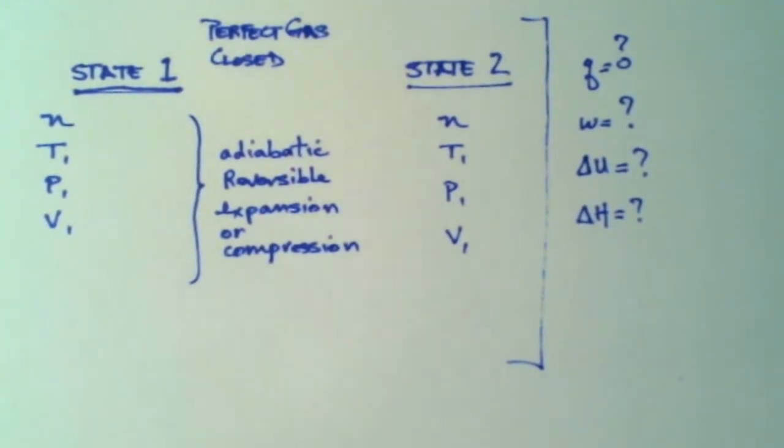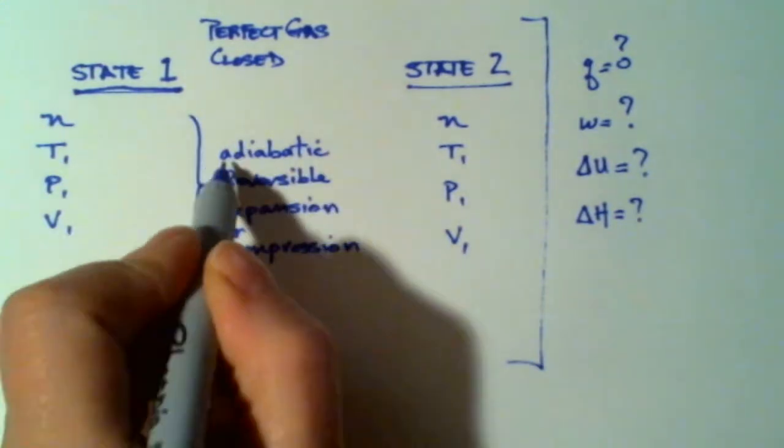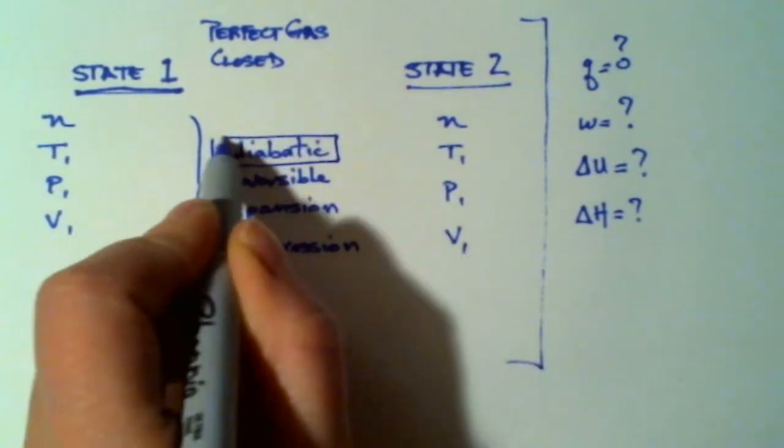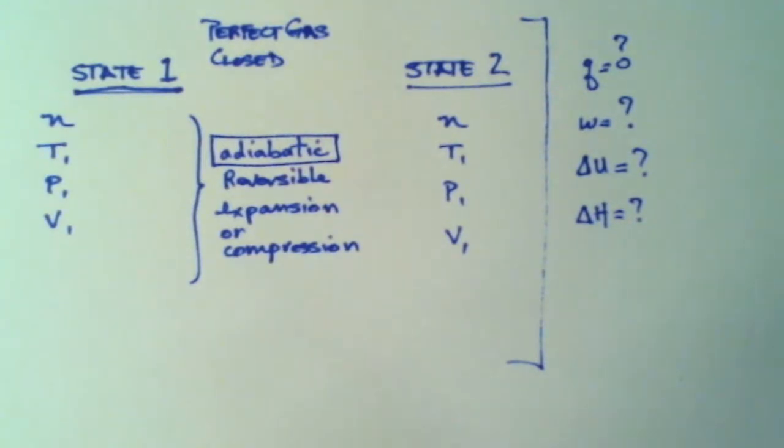In this tutorial, let's consider a perfect gas in a closed system that's undergoing an adiabatic change, specifically a reversible adiabatic expansion or compression.